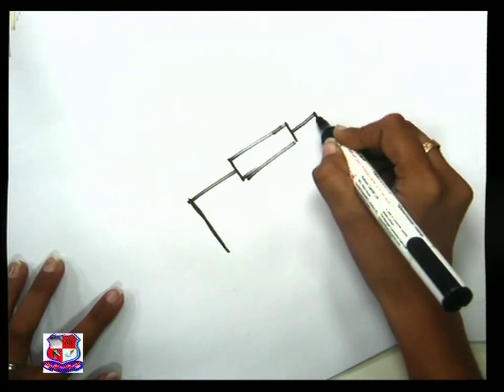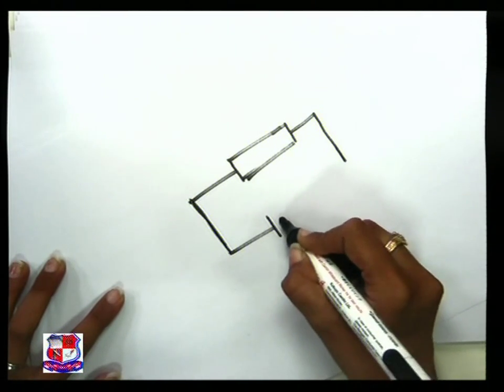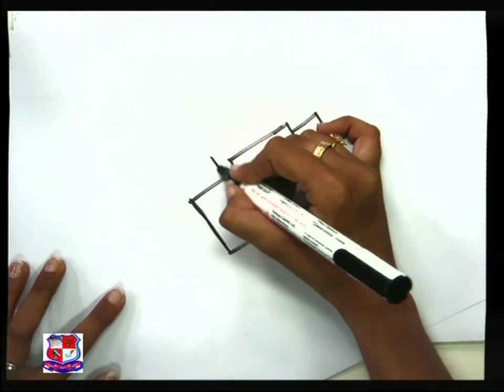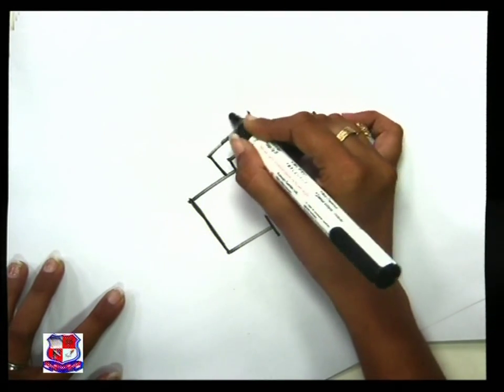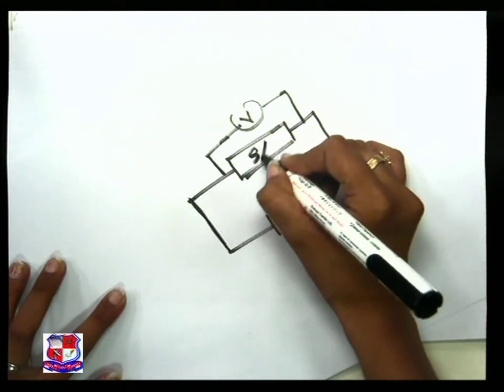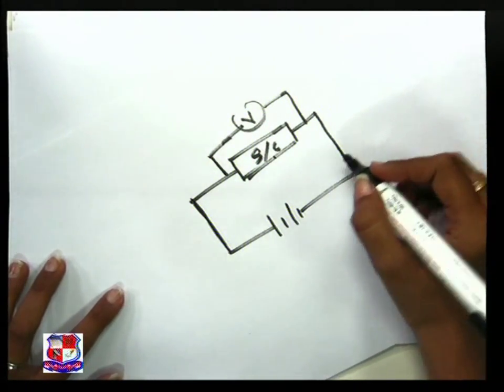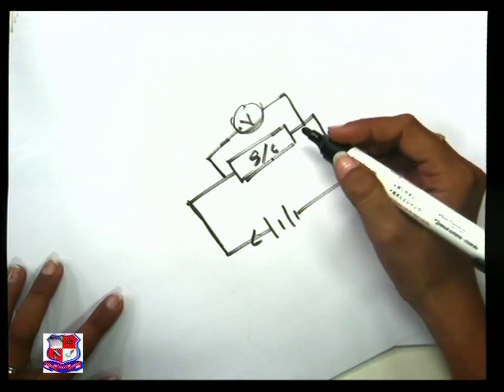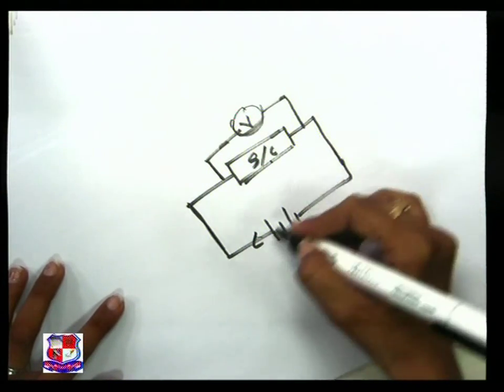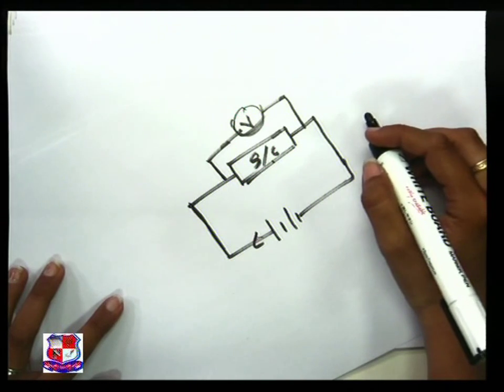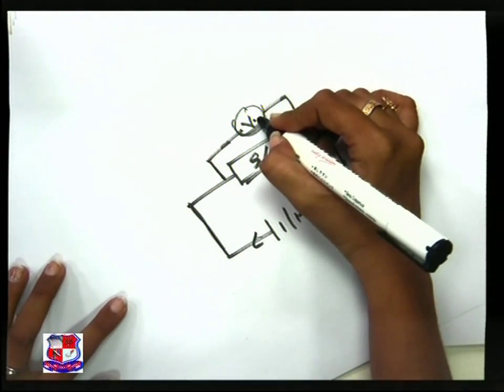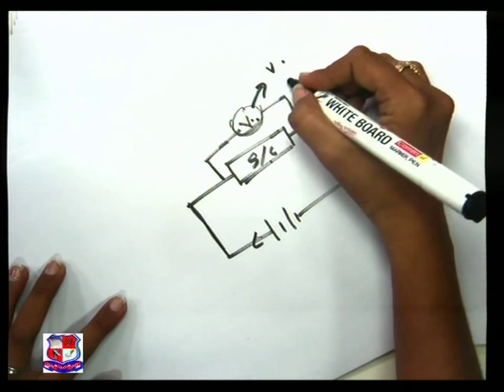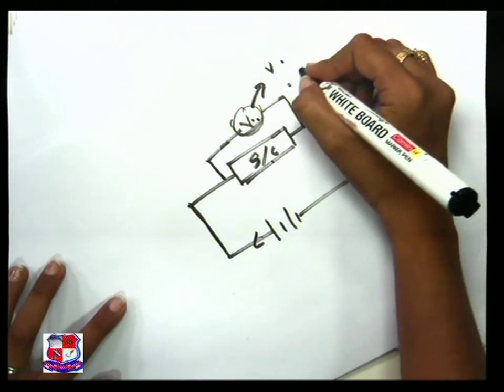Here the superconducting material is connected with the battery and there is the potential difference. When current flows in the superconducting material, the potential difference does not drop the voltage, but sometimes potential difference drops nearly to zero.